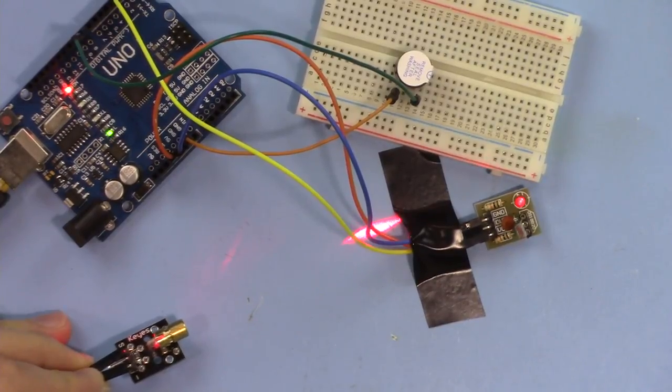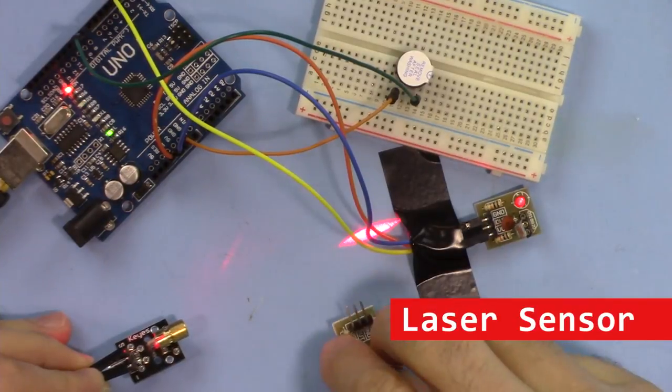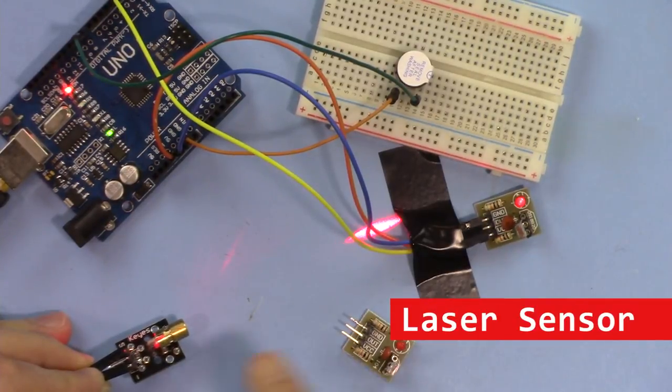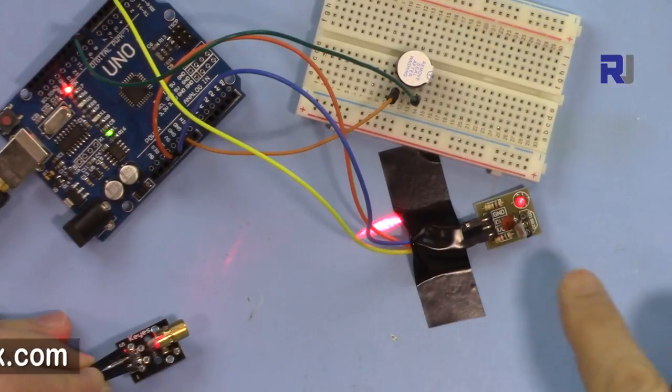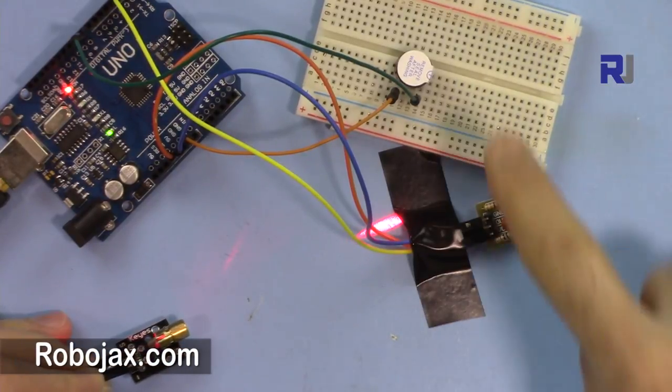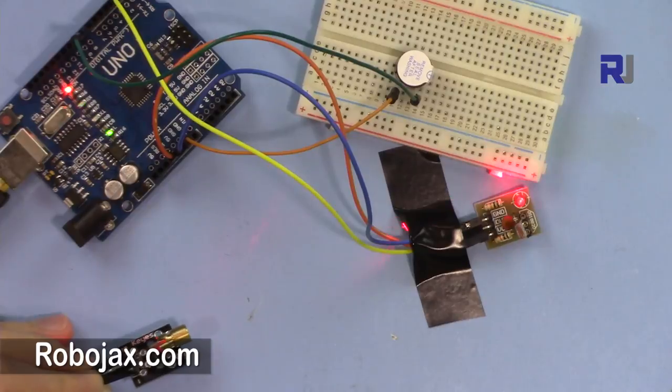Hi, welcome to another video tutorial from Robojax. In this video I'm going to show you how we can use this laser transmitter and this laser receiver to detect the ray of laser and turn on a buzzer or do something like this.